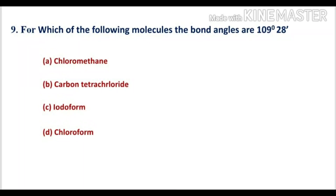Question number 9: for which of the following molecules are the bond angles 109 degrees 28 minutes? The options are A, chloromethane; B, carbon tetrachloride; C, iodoform; D, chloroform.